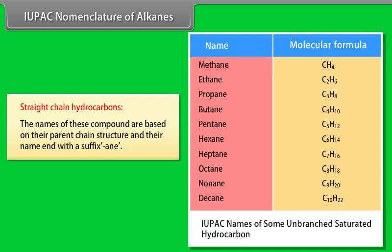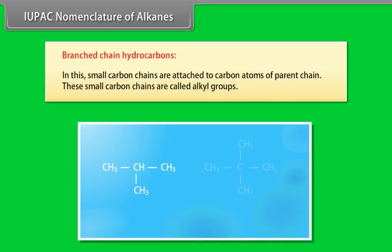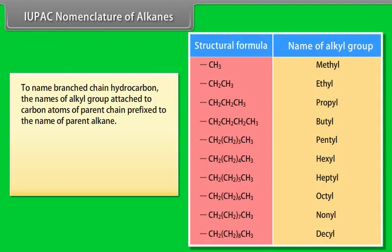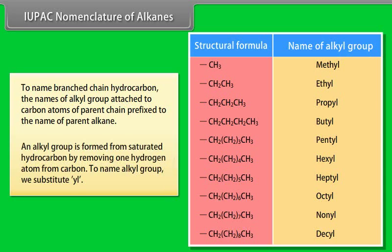For IUPAC nomenclature of alkanes — straight-chain hydrocarbons: the names are based on their parent chain structure and end with the suffix -ane. For branched-chain hydrocarbons, small carbon chains attached to the parent chain are called alkyl groups. To name a branched chain hydrocarbon, the name of the alkyl group attached to the parent chain is prefixed to the name of the parent alkane.